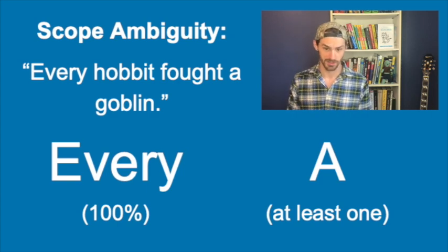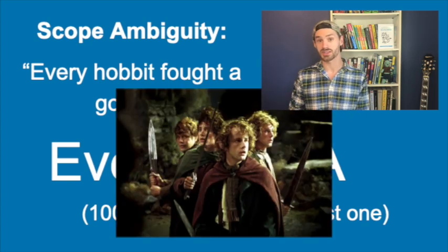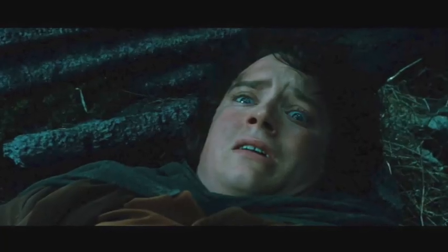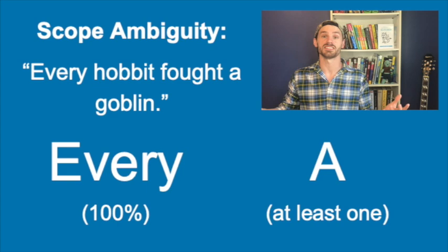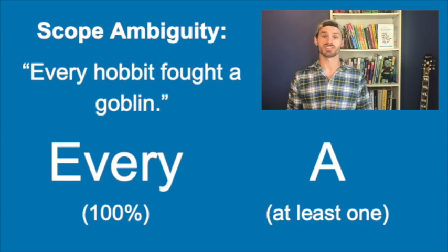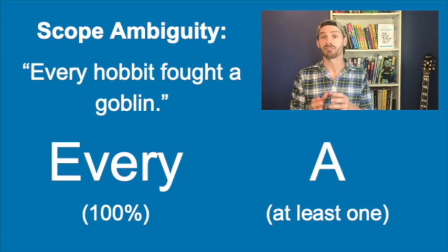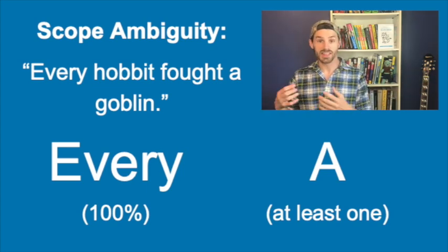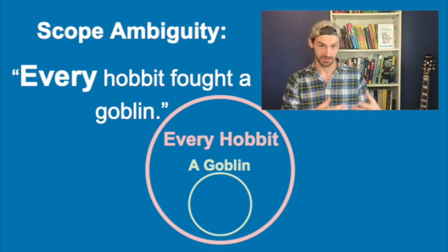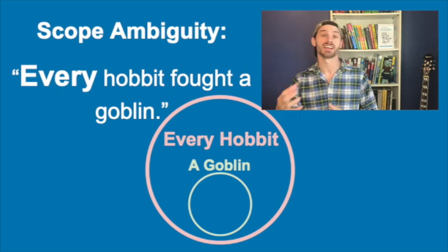Take a look at the word "every" for a moment. Since this word indicates 100% of something, it tells us that all of the hobbits present must be in battle with a goblin. If there's even one hobbit slacking off in the corner not fighting, the whole sentence is a lie. If "every" has a bigger scope than "a," we should pay most attention to the fact that 100% of the hobbits are fighting some goblin or another — it doesn't matter whether they're all fighting the same one or different ones. We can think of the sentence like this: in the case of every hobbit, there is at least one goblin that he is fighting. The circles here represent which quantifier has the bigger scope.